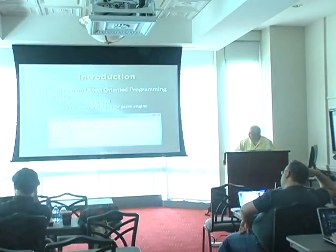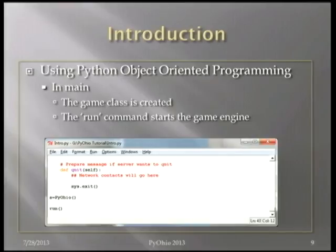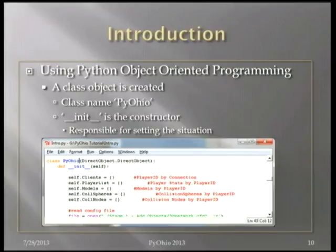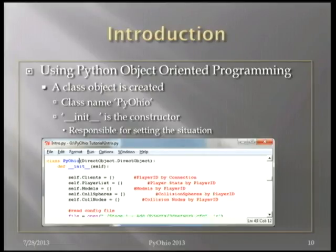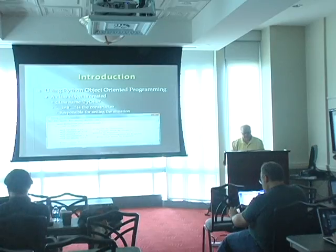There's a function called 'quit' that when called does a system exit, killing the whole program. The class is called PieOhio and it inherits from DirectObject. The double-underscore init function is the constructor, and in here we build our environment — loading all objects and all the rules by which we run our game.